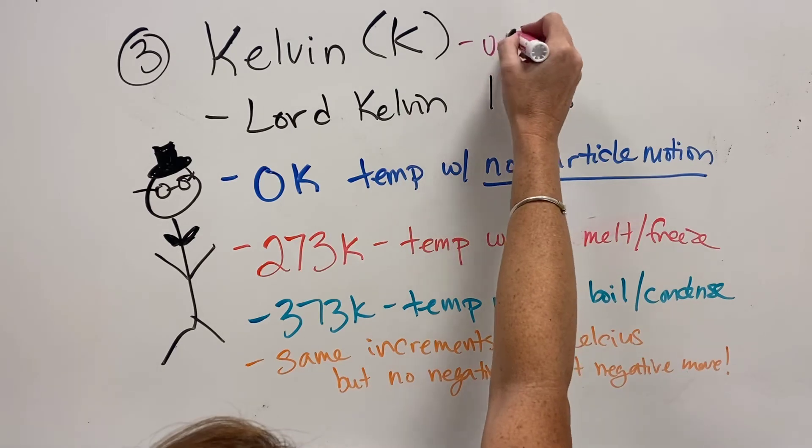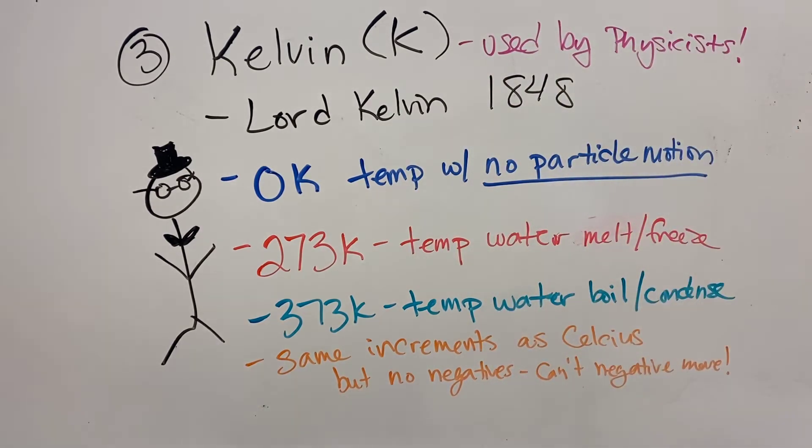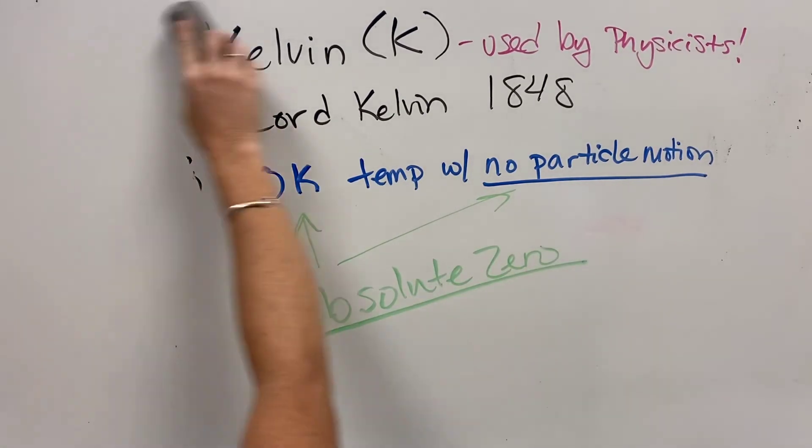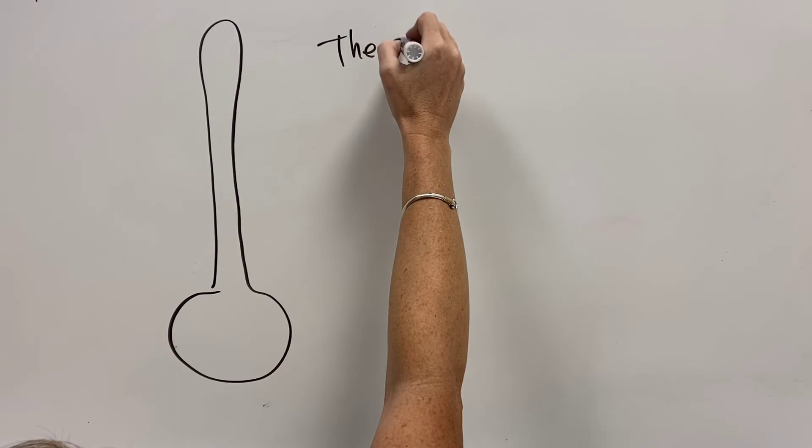But he took these negatives away because you can't negatively move. This system is used by physicists. It hasn't really gained a lot of traction worldwide. But when we understand what heat and temperature are, it actually makes a lot of sense. Zero Kelvin then is defined as absolute zero, the temperature that no movement happens. So it makes a whole lot of sense.